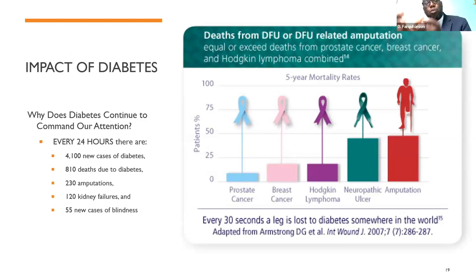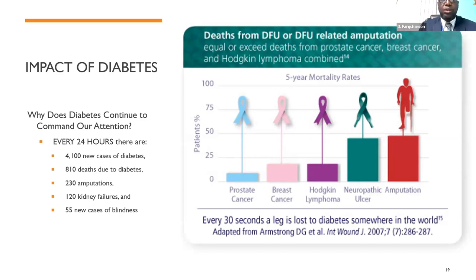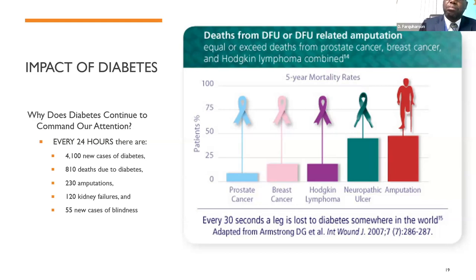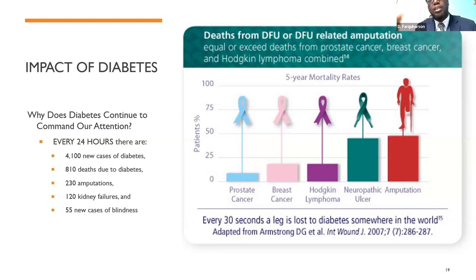Consider the impact of diabetes: every 24 hours there are about 4,000 new cases of diabetes diagnosed around the world, about 800 people die just because of diabetes, about 200 amputations are done, 120 persons develop kidney failure, and there are 55 new cases of blindness — all due to diabetes. When I started vascular surgery more than 20 years ago, every 30 seconds a limb was lost. Now it's down to every 20 seconds, so we are not doing a good job of preventing amputations.